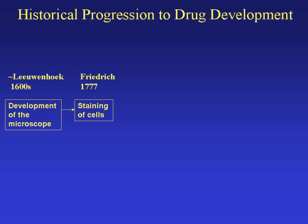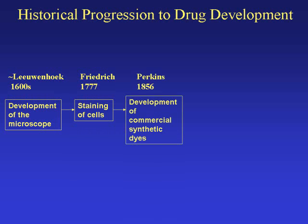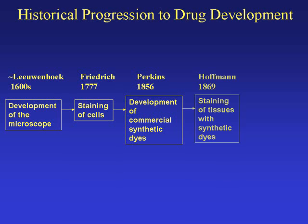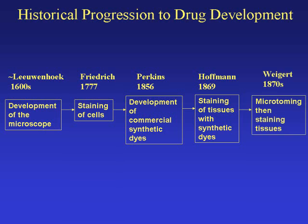In 1777, Friedrich decides to stain cells so that they show up better under microscopes. Then in 1856, Perkins develops the use of synthetic organic chemistry to produce dyes for cloth — thus another textile connection. Around 1869, Hoffman decides to use various synthetic dyes to stain cells before putting them under a light microscope. In the 1870s, Weigert uses what we now call a microtome to slice tissues into very thin sections before staining.